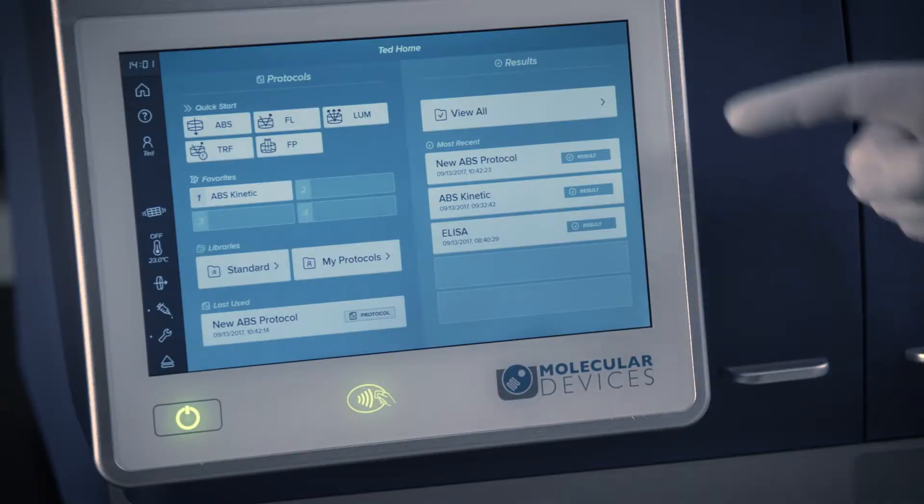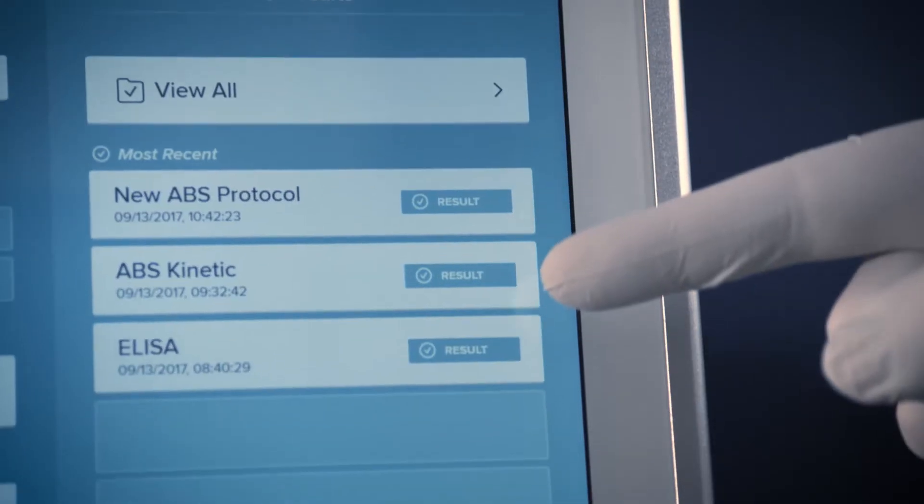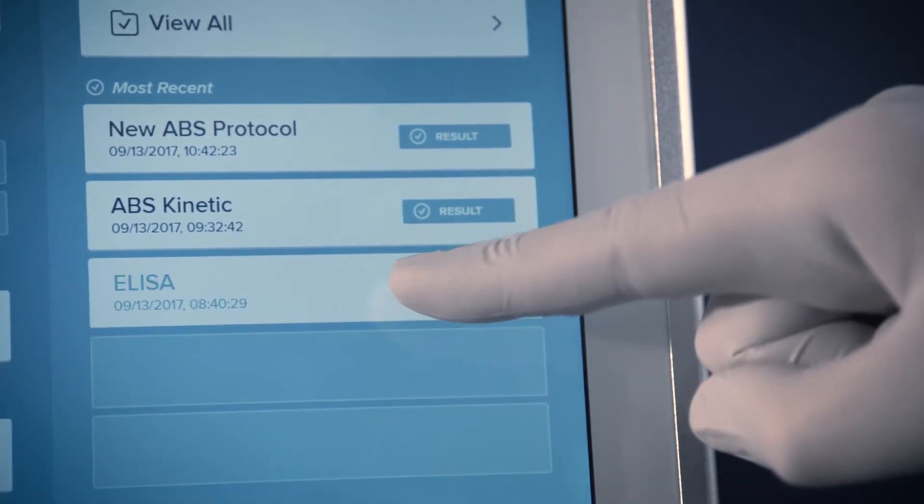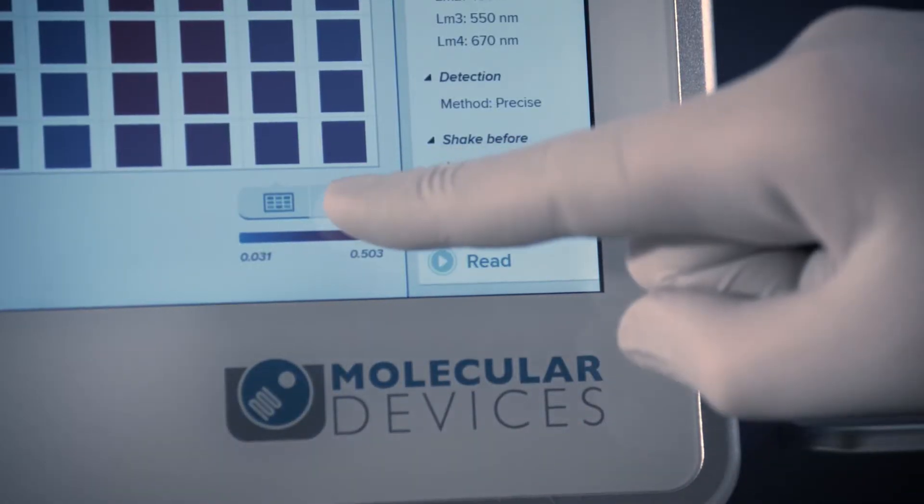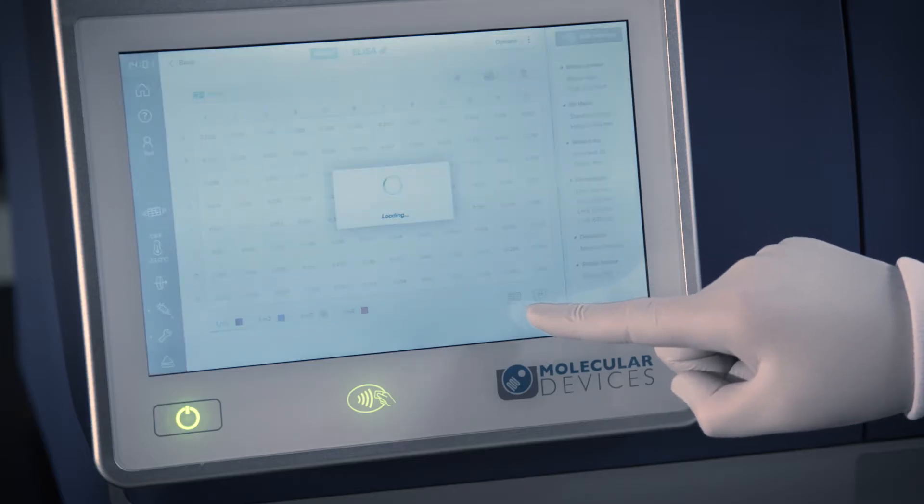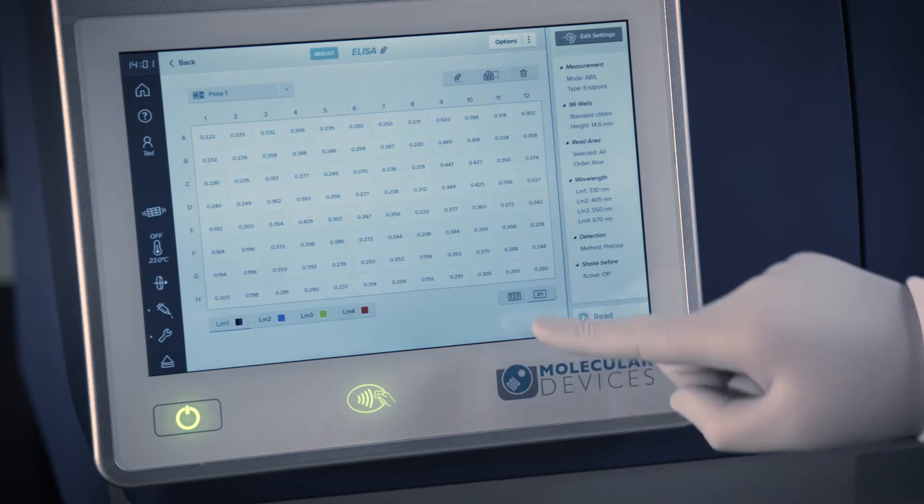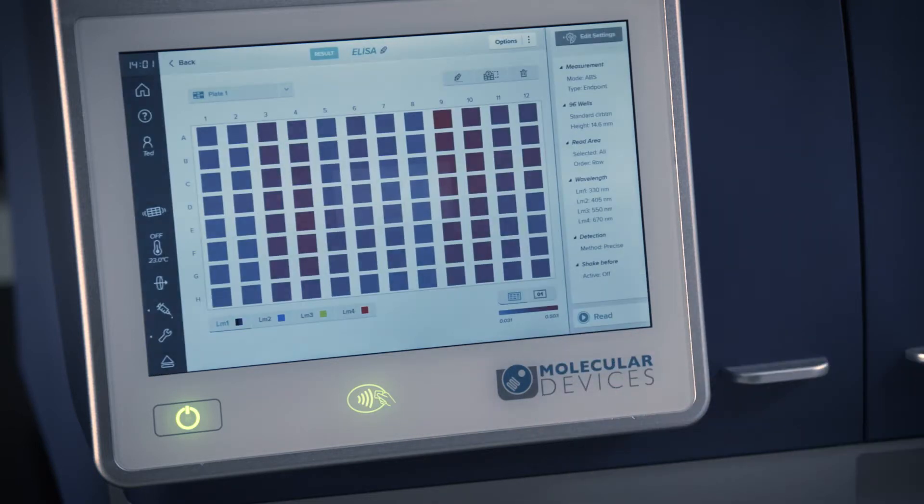After your read is finished, your protocol file will change to a results file. In the results view, you can select between two different view modes: numbers, which will display the raw results of the read, and heat map, which will display the data in color heat map format.